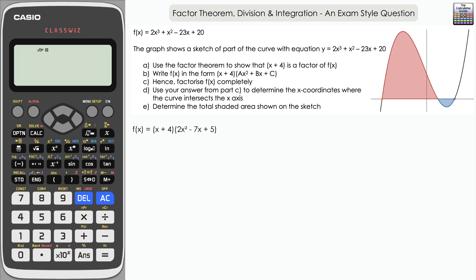Part C says 'hence', so we use the result from Part B to factorize f(x) completely. You can use the polynomial solver to find the solutions for f(x) - essentially answering Part D early. Be careful using solve to help factorize, as it can cause confusion. We'll use the calculator to get those solutions as a check, and then do a full manual method to confirm everything's correct.